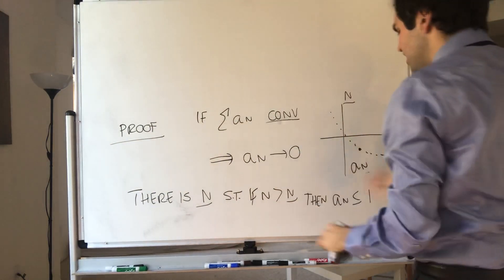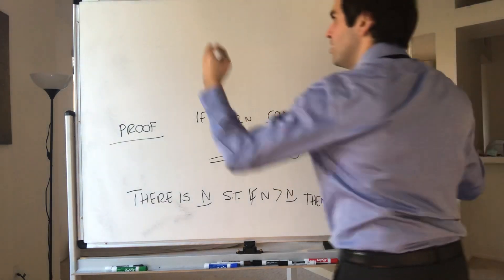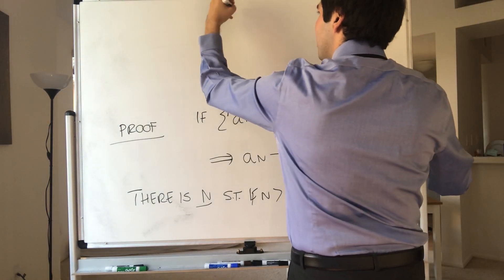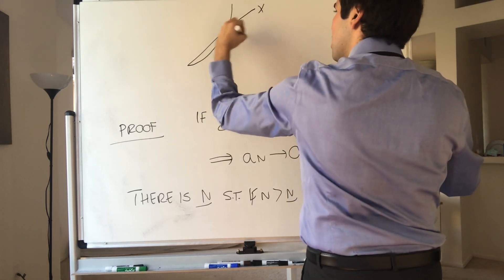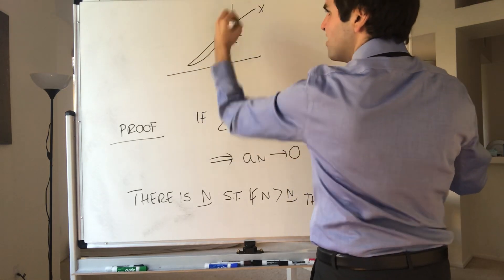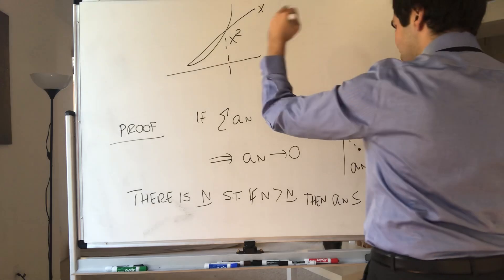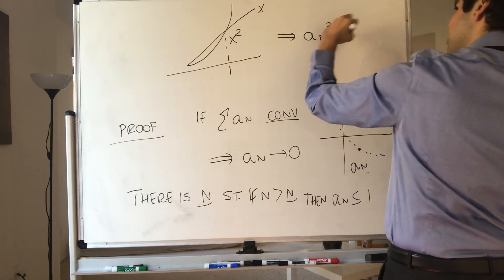However, if aₙ is less than one, then the square of the number is less than the number itself. So if you want, this is x, and this is x squared. Well, before one, x squared is less than x. So in particular, we get that aₙ squared is less than or equal to aₙ.